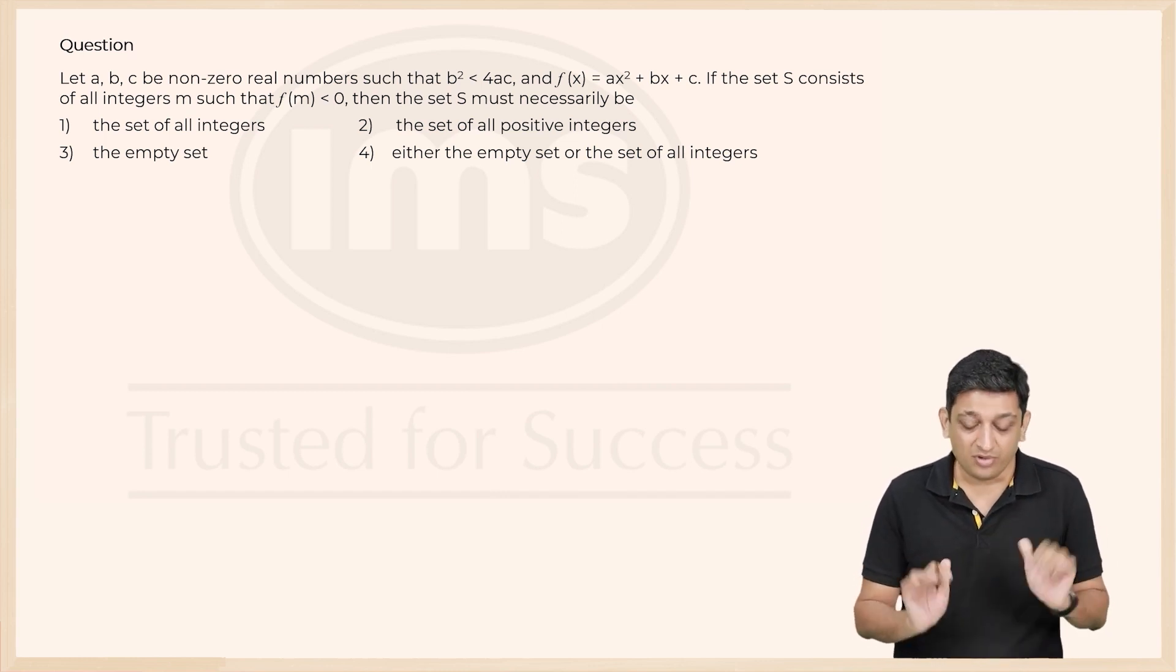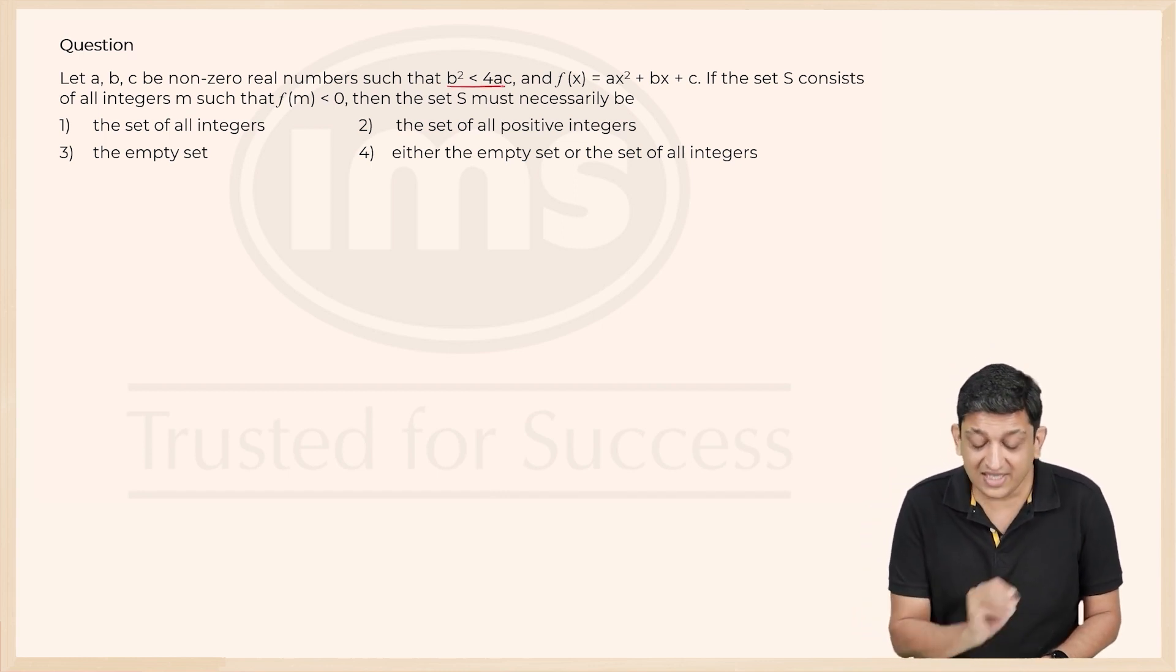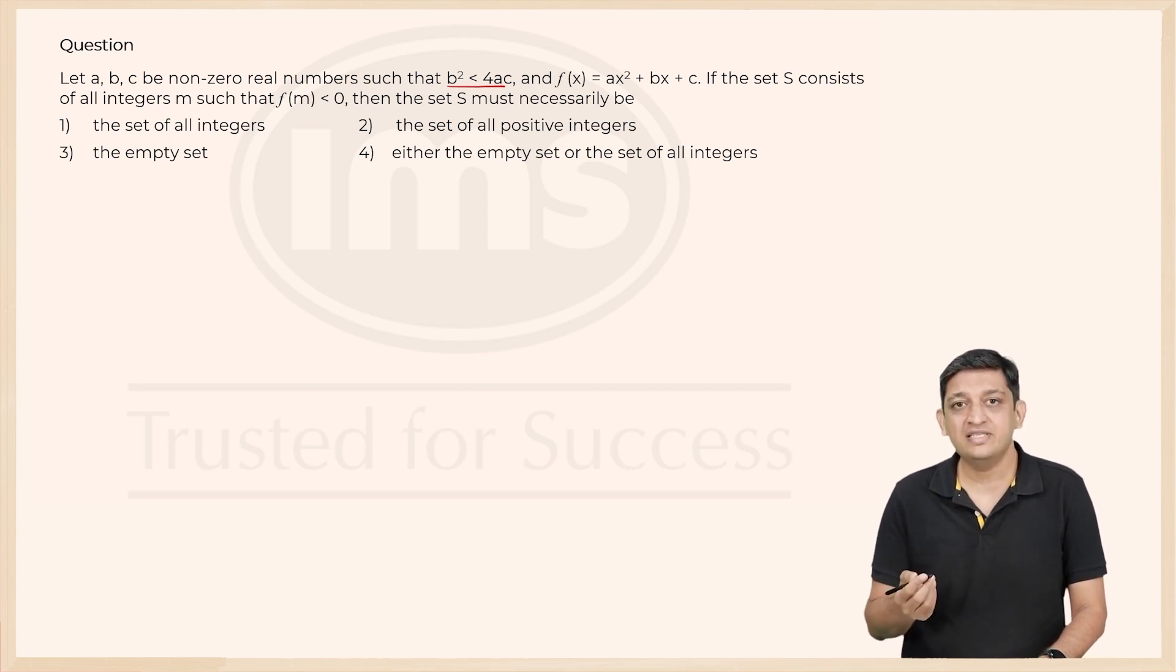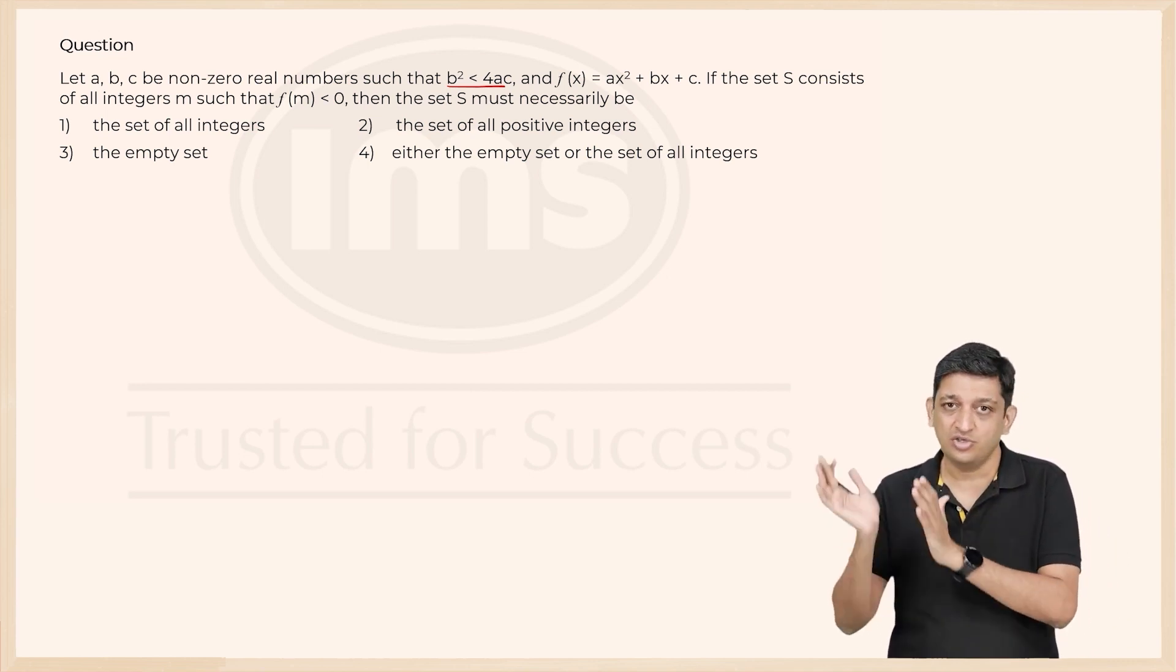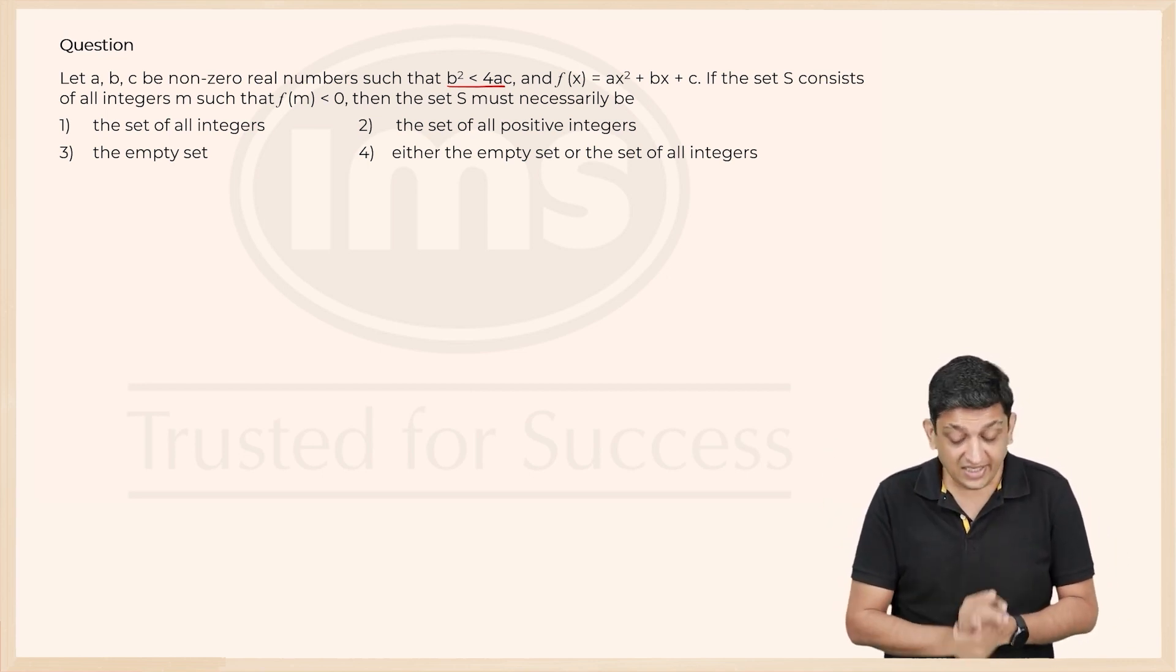Just to give you some context, when b² is less than 4ac, it basically means that we will have all imaginary solutions or complex roots or complex numbers—complex solutions to this particular function.